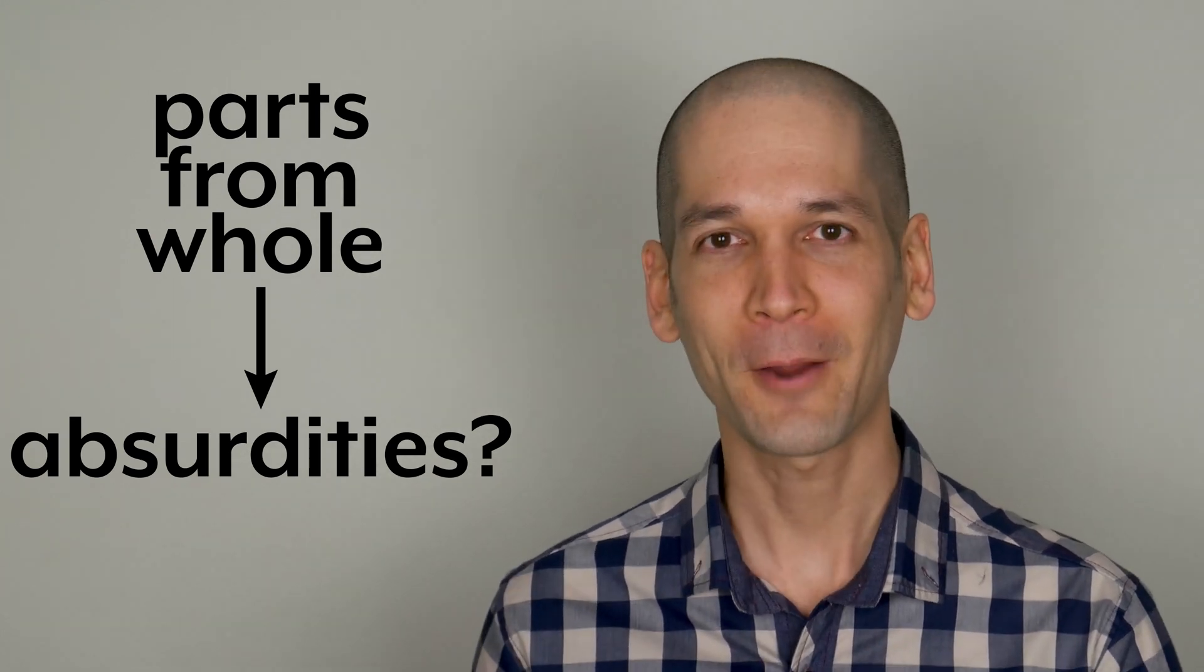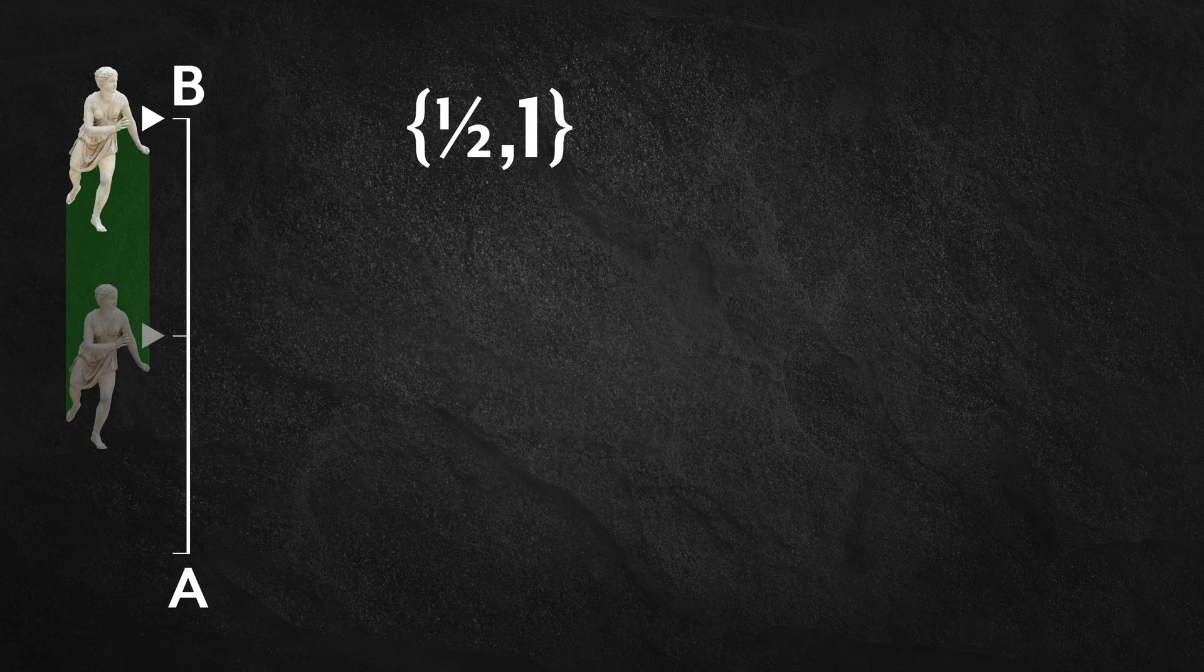But first, the paradox. Let's say that Atalanta wants to walk from B to A. Before she can get all the way there, she must get halfway there. But before she can get halfway there, she must get a quarter of the way there. Before a quarter, one-eighth.